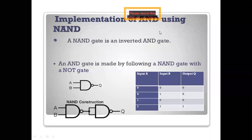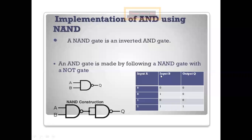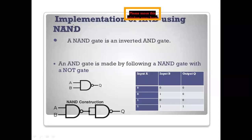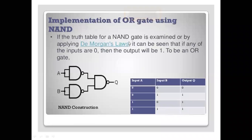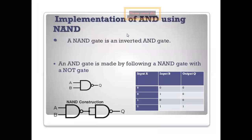Next, implement OR gate using NAND gate. OR gate performs addition: Y = A plus B. Truth table: 0+0=0, 0+1=1, 1+0=1, 1+1=1. The logical diagram for OR gate using NAND is designed using De Morgan's theorem.